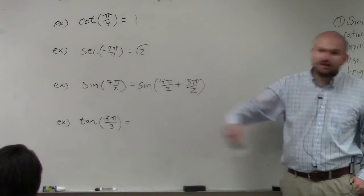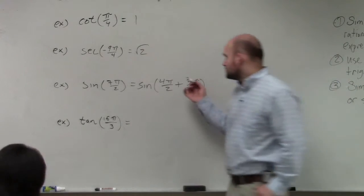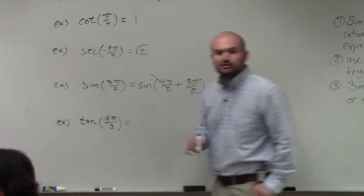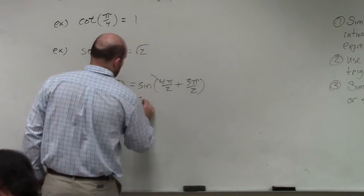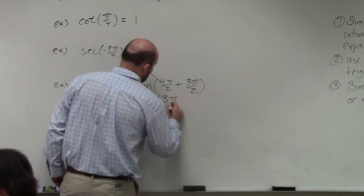Because 4 pi is what? A circle, right? So we don't really need to do that extra circle. So what is coterminal with 7 pi over 2? Sine of 3 pi over 2.